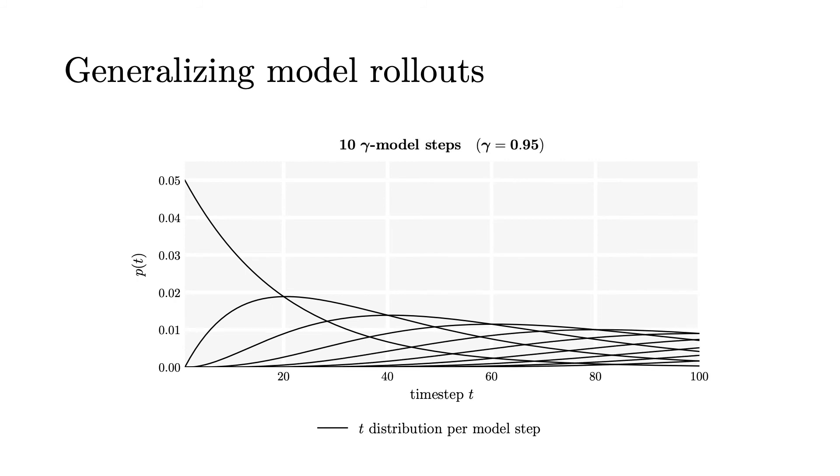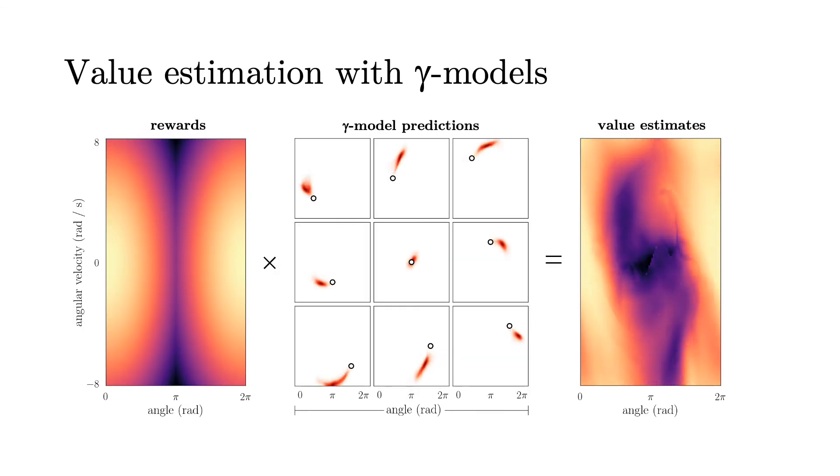Each step of a gamma model rollout has a negative binomial distribution over time. We may re-weight the per-step predictions to approximate a gamma model trained with a larger discount.